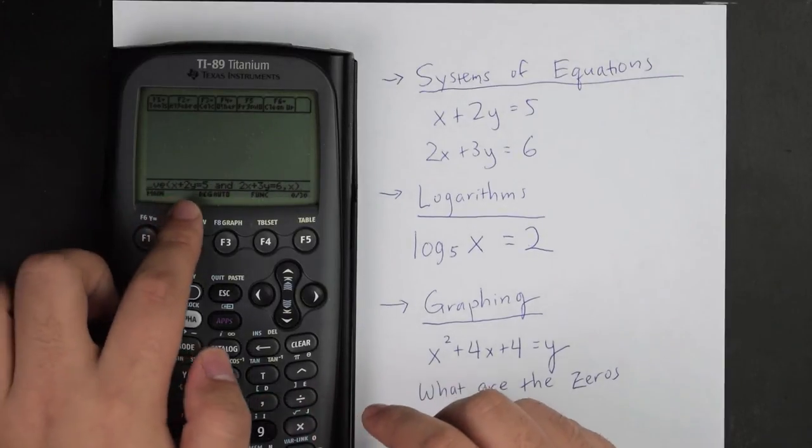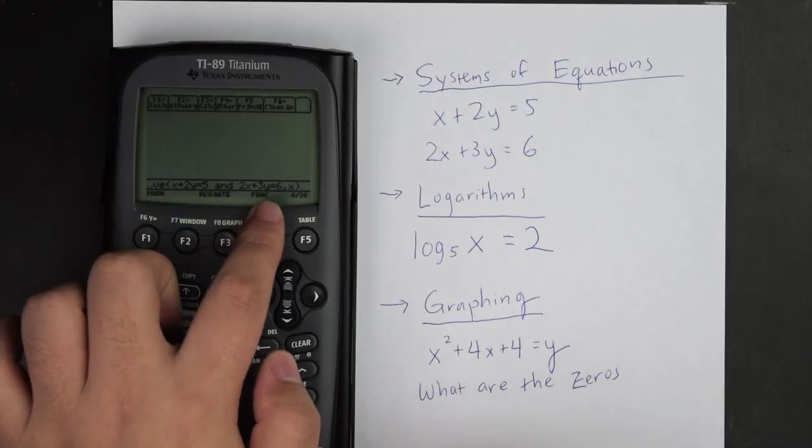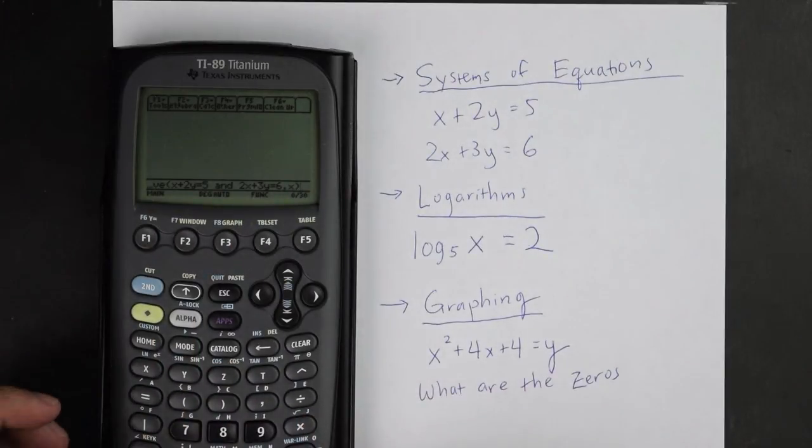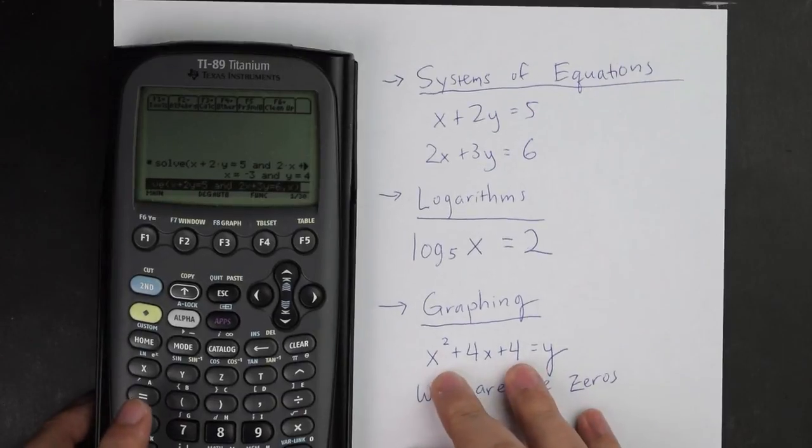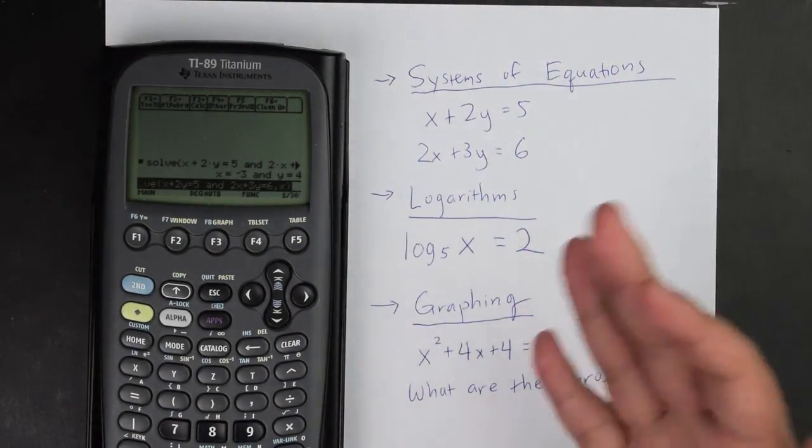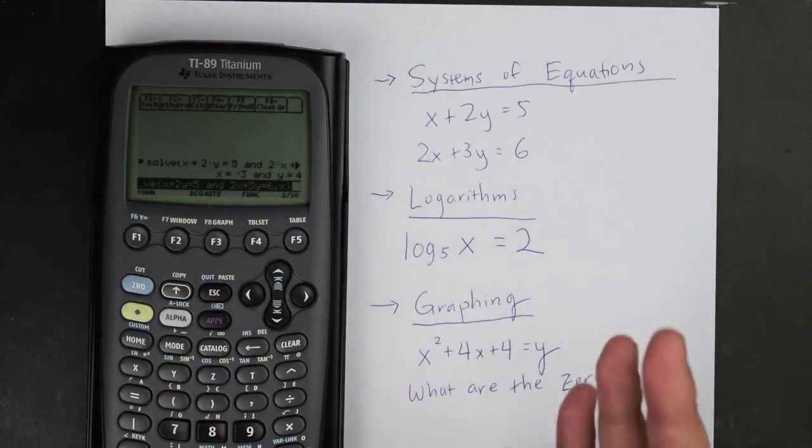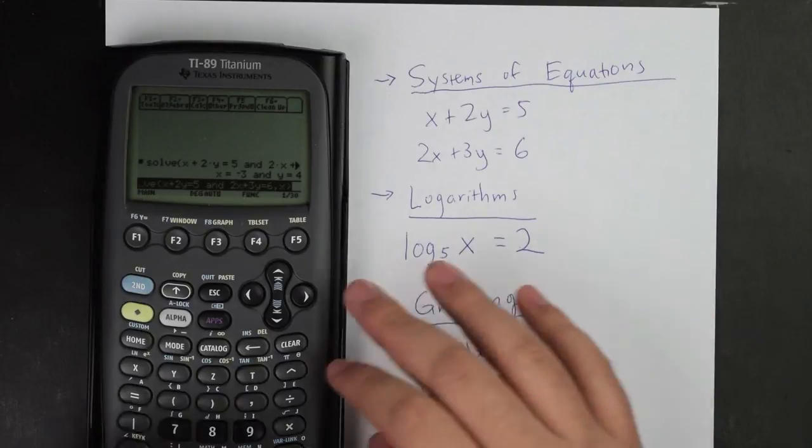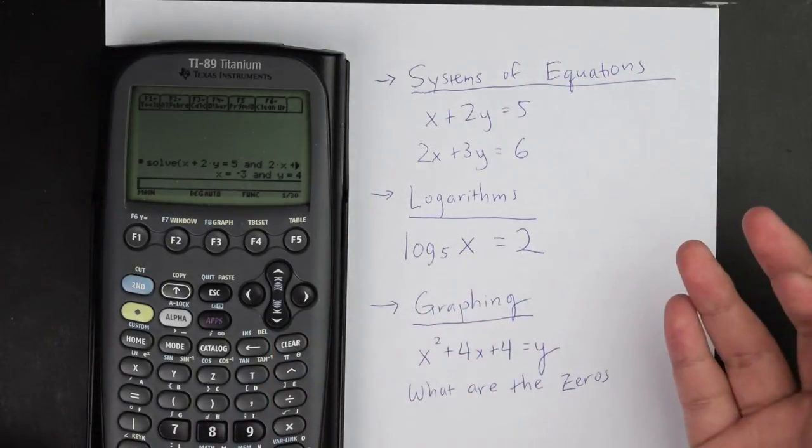So I put solve x plus 2y equals 5, and 2x plus 3y equals 6, comma x. And the comma is right here. And the reason why I do this is because when I enter it and solve it out, it actually punches out the answer that x equals negative 3 and y equals 4, which will save you so much time. When you are on the Math 2C exam, it's all about the time and speed. So that's one great thing about this calculator.